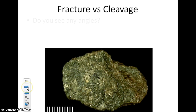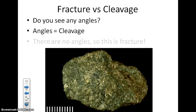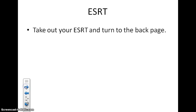Fracture versus cleavage — this one is key. Do you see angles? Do you see flat sides? Angles and flat sides would mean cleavage, but if there are none, this is an example of fracture. Fracture basically means if it looks random — and this looks kind of random.